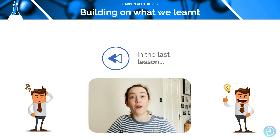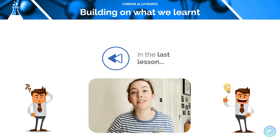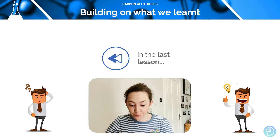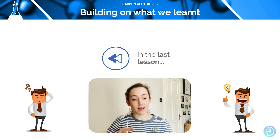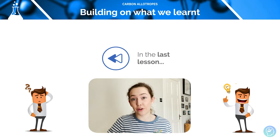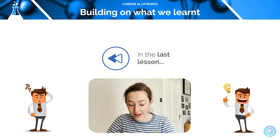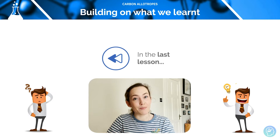Hi and welcome to this tutorial on carbon allotropes. In the previous tutorial we had a look at metallic bonding in metal atoms and we defined those as the attraction between the delocalised electrons and the positive ions in the lattice, and now we understand the physical properties behind metals.